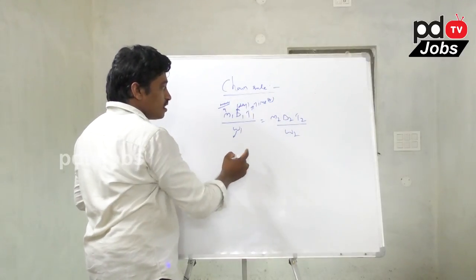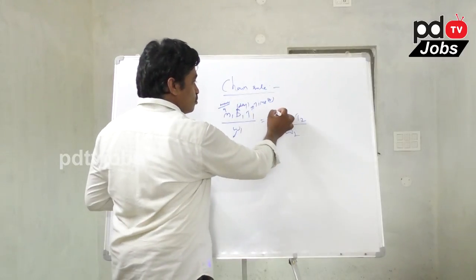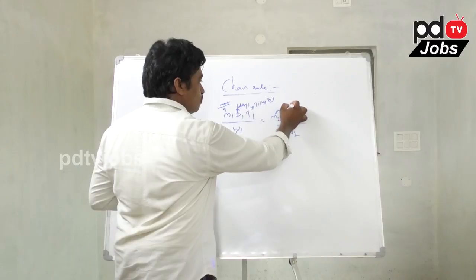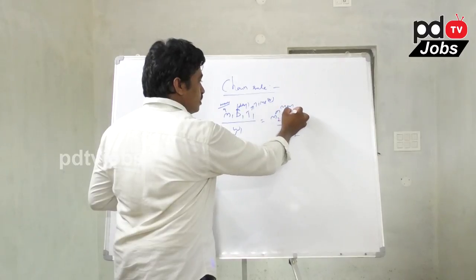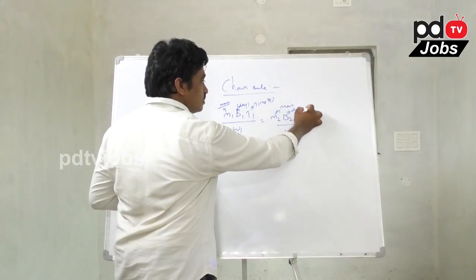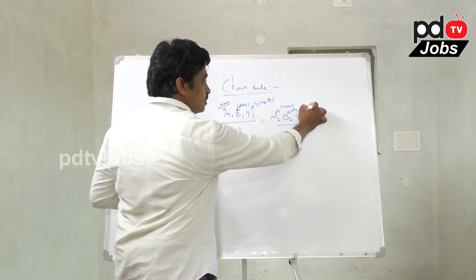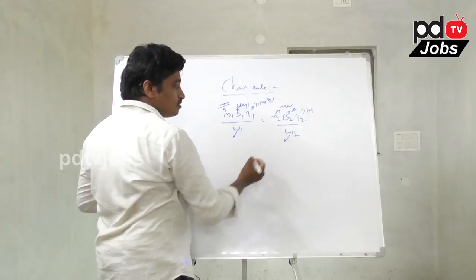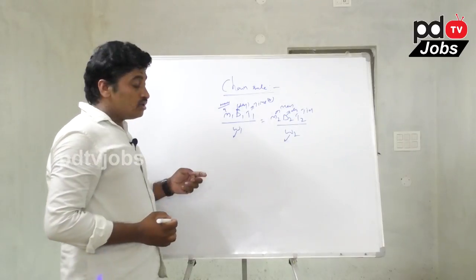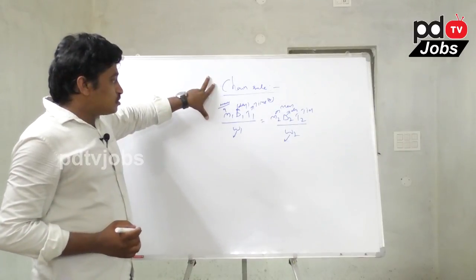W1 means work. On the other side: M2 is men, D2 is days, T2 is time, and W2 is work.